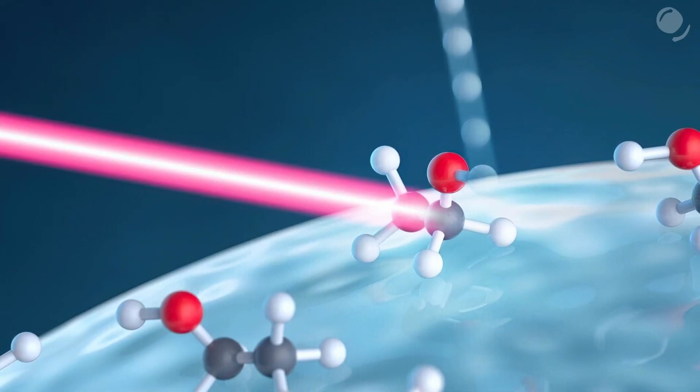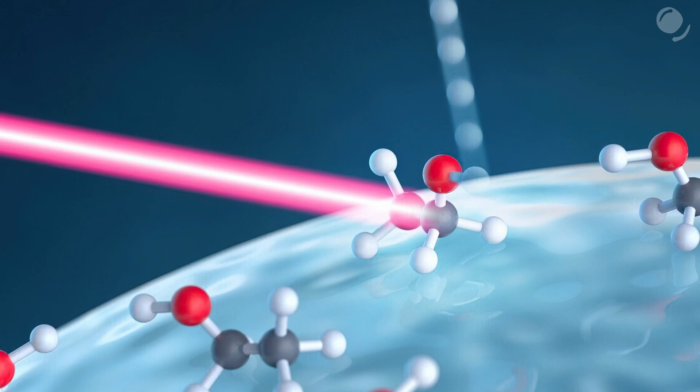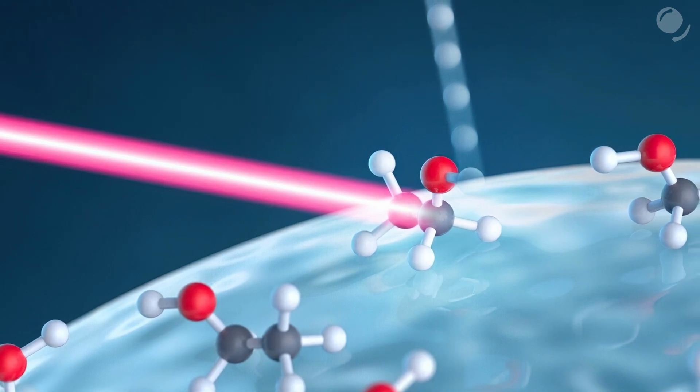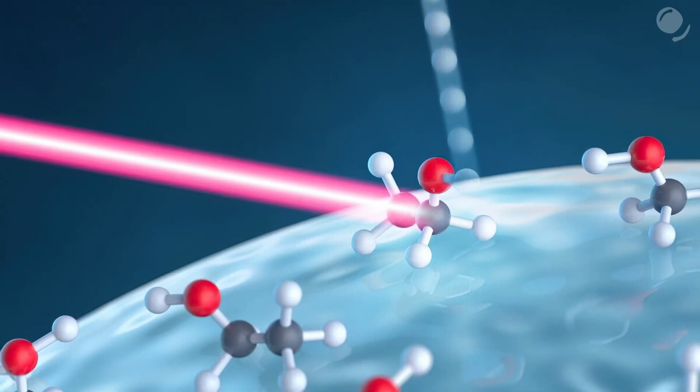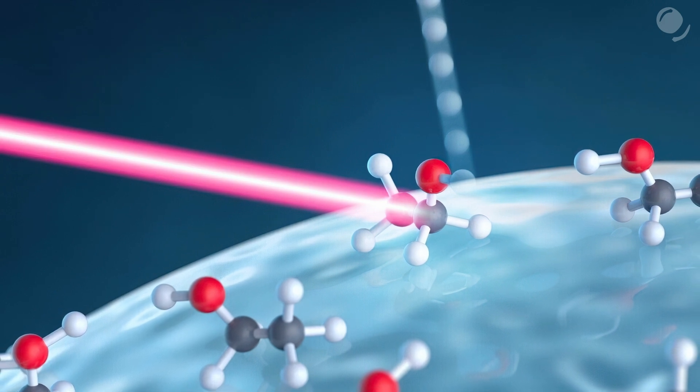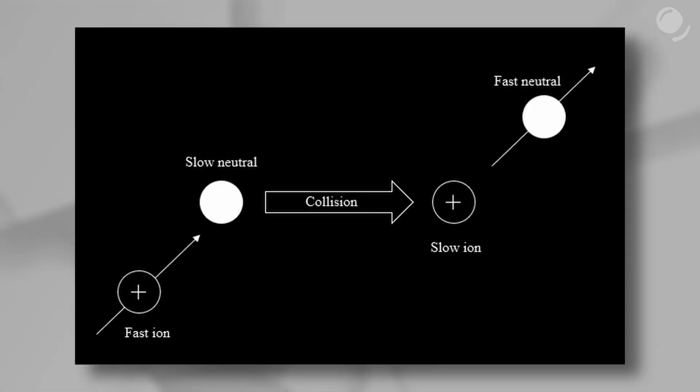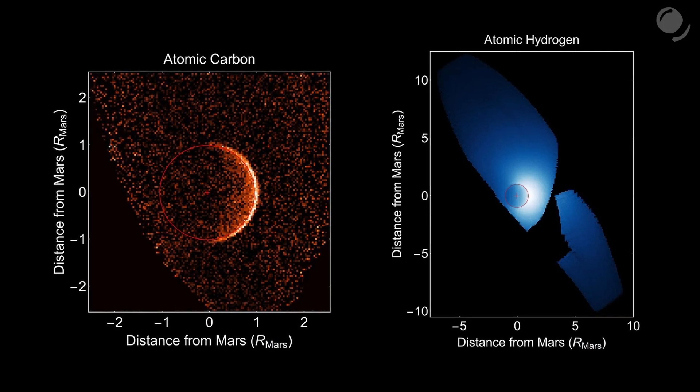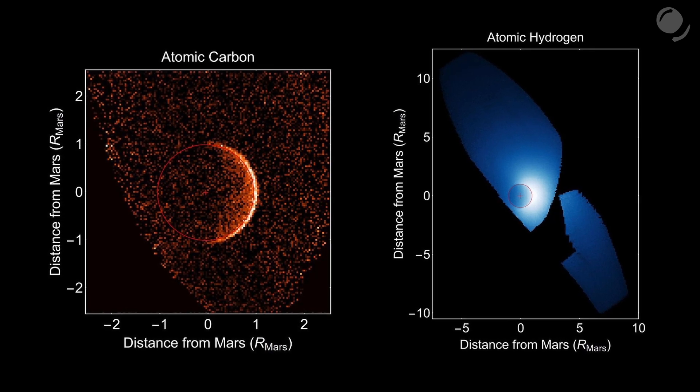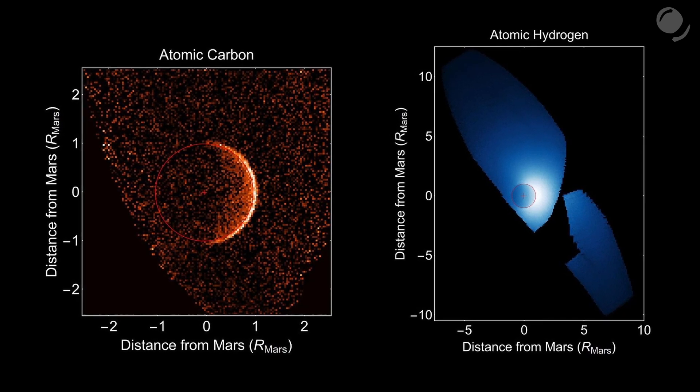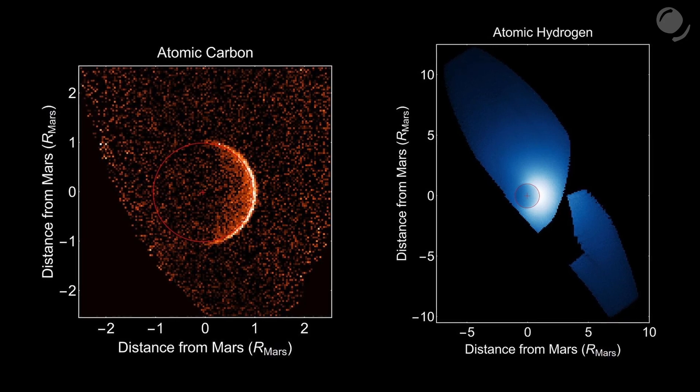Now let's briefly touch on non-thermal processes. Photochemical processes also can make atmospheres escape when photons coming from a star react with atmospheric particles and that can give particles enough energy to overcome planets gravity. For instance, neutral particles can be broken apart by ultraviolet radiation. And then resulting particles recombine with electrons and form a fast neutral particle. This is one of the ways Mars loses carbon, hydrogen and nitrogen.